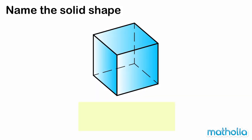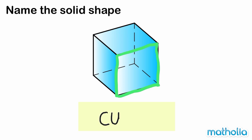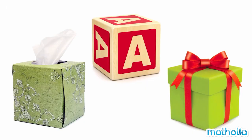Name the solid shape. This shape has square faces. We call this solid shape a cube. These objects have shapes similar to a cube.